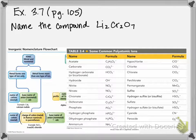So right off the bat here, we want to recognize if this compound is ionic or molecular. We have lithium, which is a metal, and then you'll notice we have chromium, which is also a metal, and oxygen, which is a non-metal.